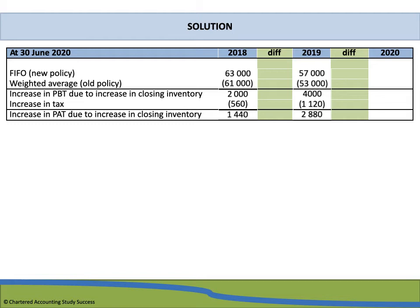For 2020, the FIFO inventory balance is R52,500 and the weighted average is R49,000, giving an increase of R3,500. Tax on this is R980, resulting in an increase in profit after tax of R2,520.